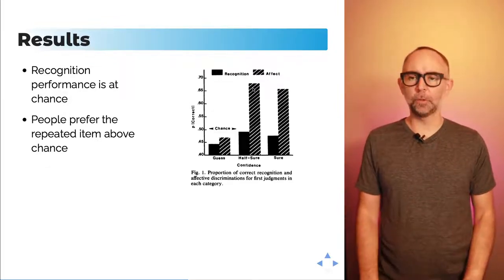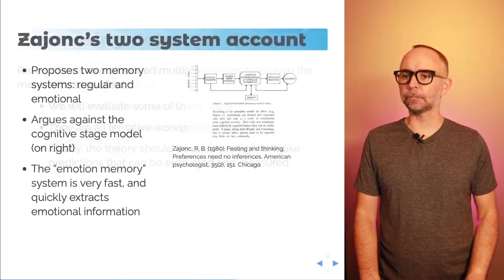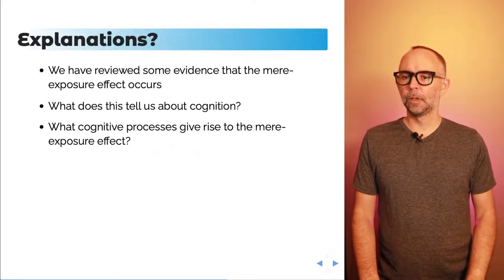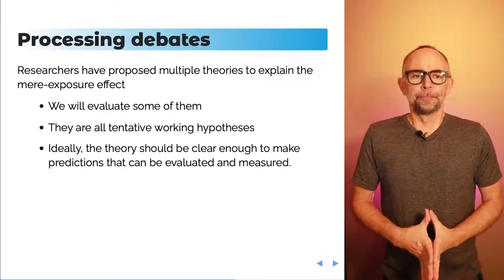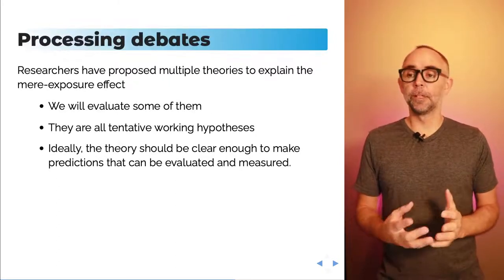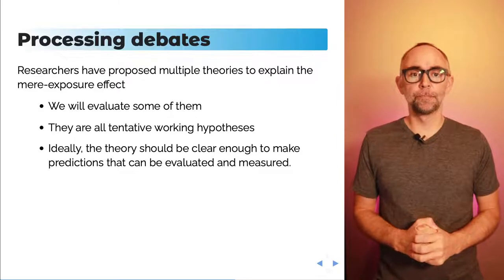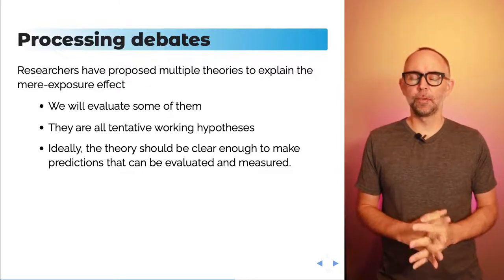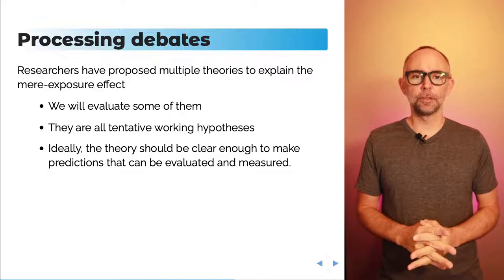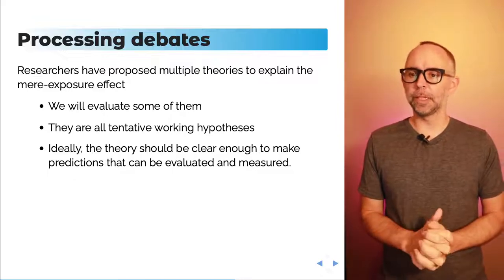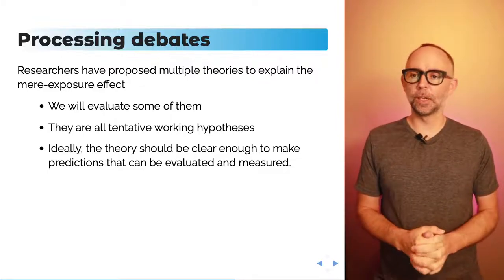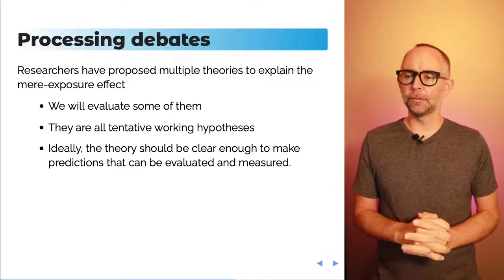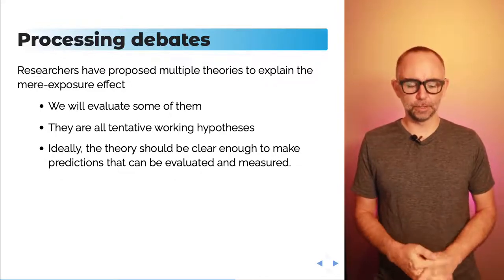So this is a curious scenario where people are sensitive to information they saw before, but only if they're making a preference judgment. They're unable to explicitly recognize that they saw that thing before. How do we explain this? This phenomenon has given rise to debates about processing. We're going to talk about a few different theories — tentative working hypotheses that, if they're good theories, should be clear enough to make predictions that can be evaluated and measured.